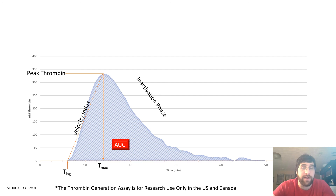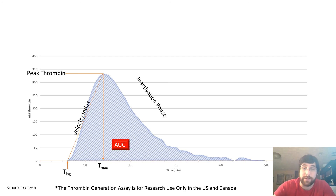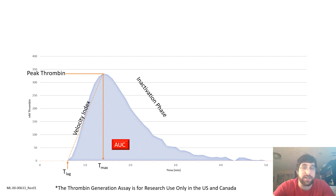Varying the concentrations of tissue factor and phospholipid surface allows the researcher to focus on different aspects of coagulation. For example, extremely high levels of tissue factor will effectively only show the effects of the extrinsic pathway — the effects of factors 8, 9, and 11 are bypassed. Conversely, using extremely low levels of tissue factor will allow the researcher to look primarily at factors 8, 9, or 11, ignoring the extrinsic pathway. Tissue factor in the range of 2 to 5 picomolar will most closely resemble physiologic conditions, and the TGA in this range will be dependent upon both the intrinsic and extrinsic pathways. Using platelet-rich plasma instead of platelet-poor plasma plus phospholipids will allow the researcher to gain insights into the interplay of platelet activation in the coagulation system.